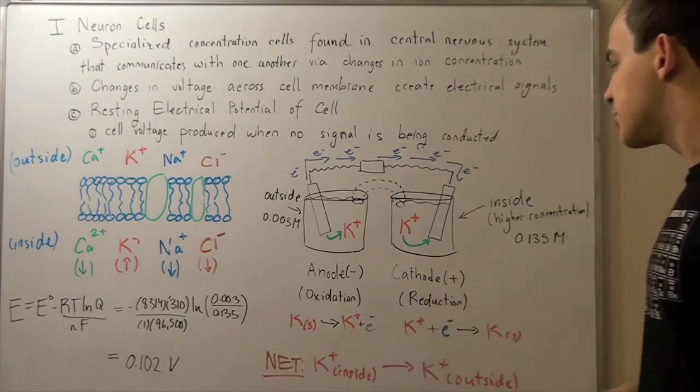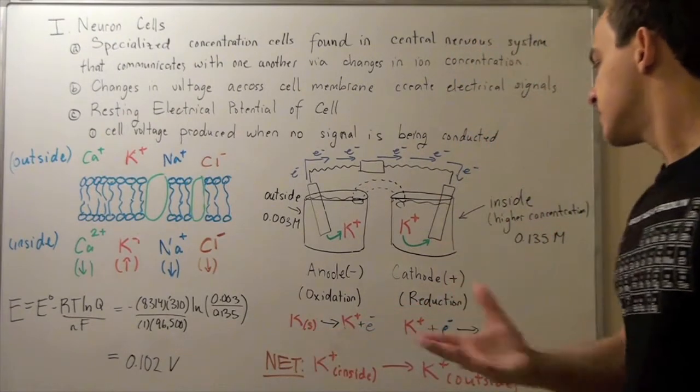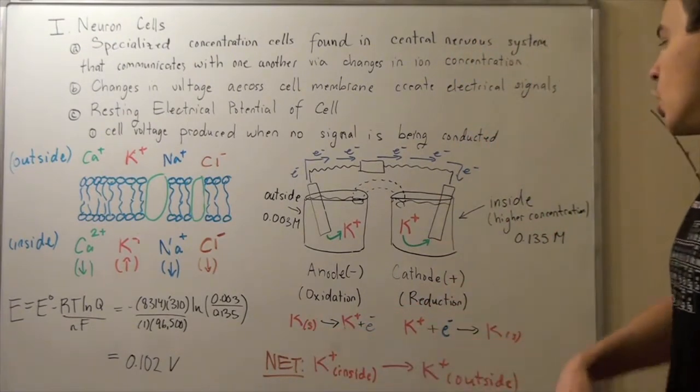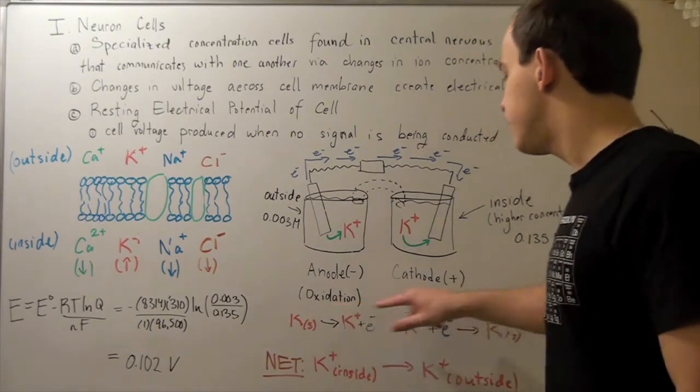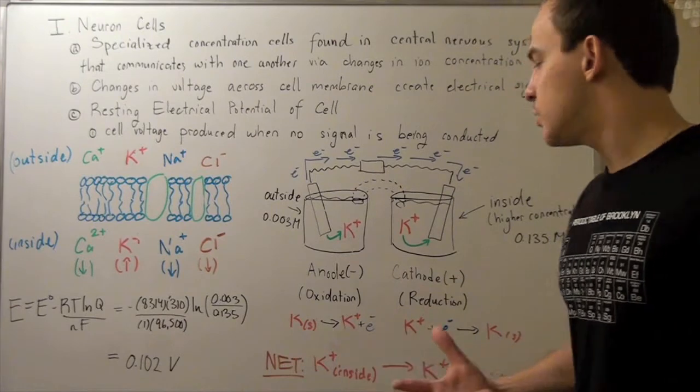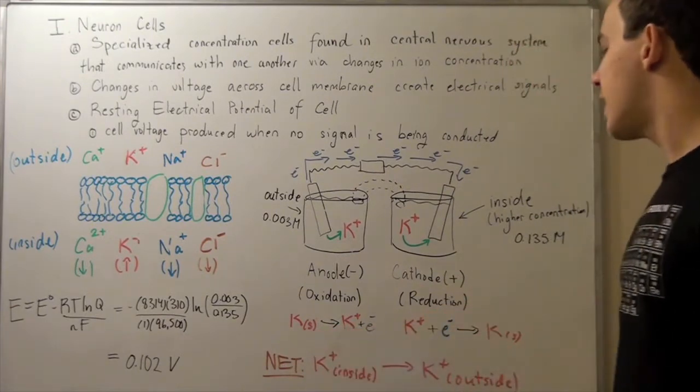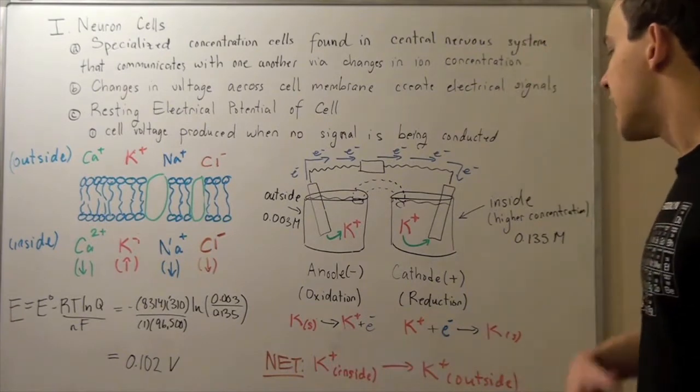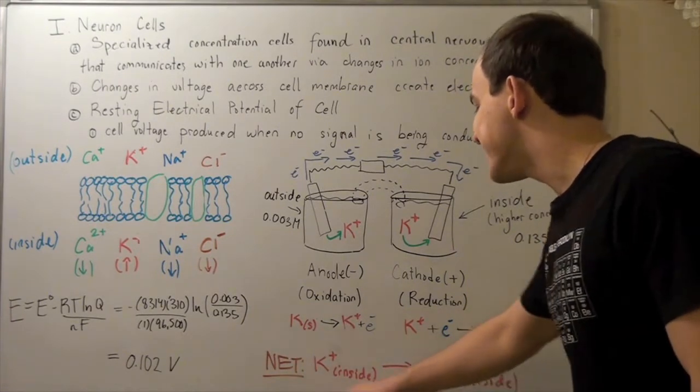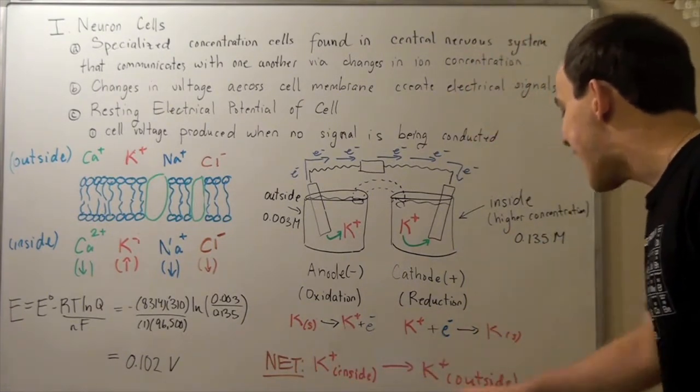This is our oxidation reaction, where our potassium is oxidized, and our reduction reaction, where the potassium accepts the electrons forming the solid. If we want to find the net redox reaction, we simply add these two up. The electrons cancel, the K solids cancel, and we are left with K+ inside and K+ outside.